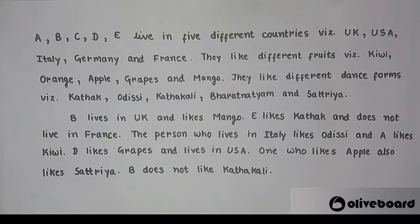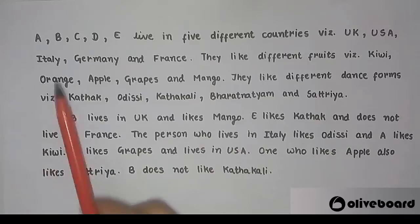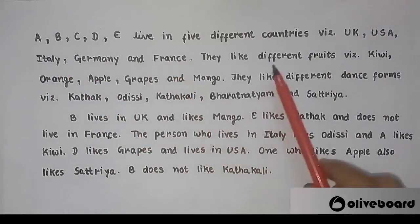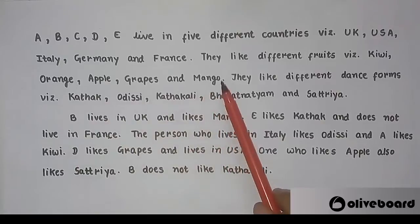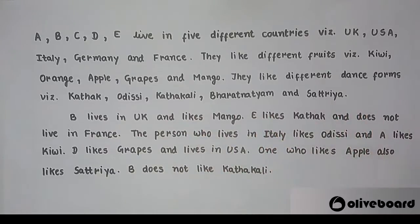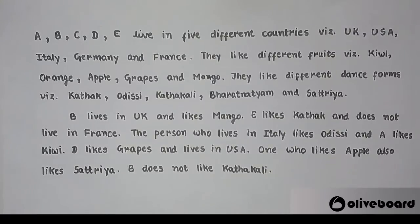Now here is another question on similar lines — also a 3-variable puzzle. A, B, C, D, E live in 5 different countries: UK, USA, Italy, Germany, and France. They like different fruits: kiwi, orange, apple, grapes, and mango. They like different dance forms: Kathak, Odisi, Kathak-ali, Bharatnatyam, and Satriya. So we have 5 people, different countries, different fruits, and different dance forms. Follow the same tips shared earlier and the approach will feel identical.